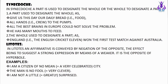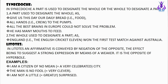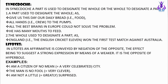The next one is litotes. In litotes, an affirmative is conveyed by negation of the opposite, the effect being to suggest a strong expression by means of a weaker one. It is opposite to hyperbole. Examples: 'I am a citizen of no mean city,' 'The man is no fool' — meaning he is very clever — and 'I am not a little surprised,' meaning I am greatly surprised.